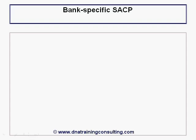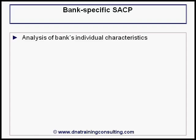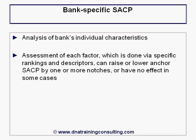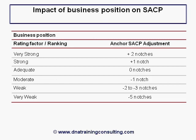After the determination of the bank's anchor SACP, S&P's criteria consider each bank-specific SACP rating factor — an analysis of a bank's individual characteristics. The assessment of each factor, done via specific rankings and descriptors, can raise or lower the anchor SACP by one or more notches, or have no effect in some cases. The table illustrates how the anchor SACP is notched on account of the bank's business position, with a very strong business position leading to a two-notch improvement versus a five-notch adverse adjustment for a very weak business position.